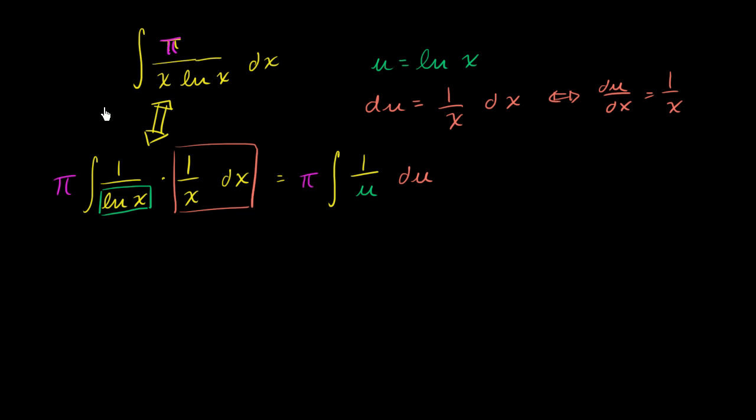And we've done very similar things like this multiple times already. This is going to be equal to pi times the natural log of the absolute value of u, so that we can handle even negative values of u, plus c, just in case we had a constant factor out here.